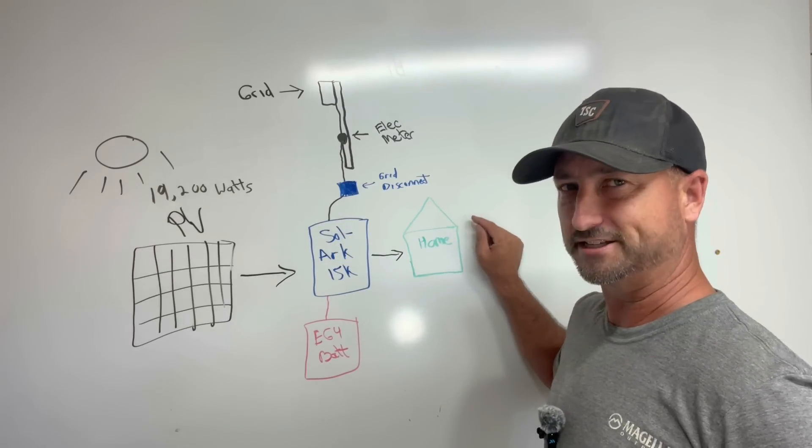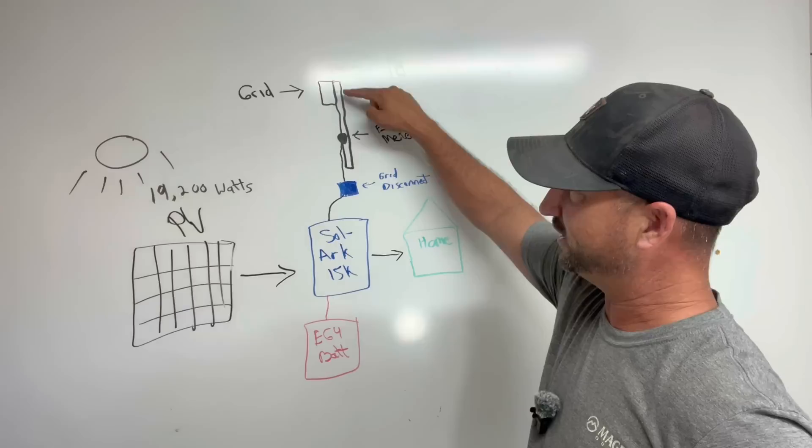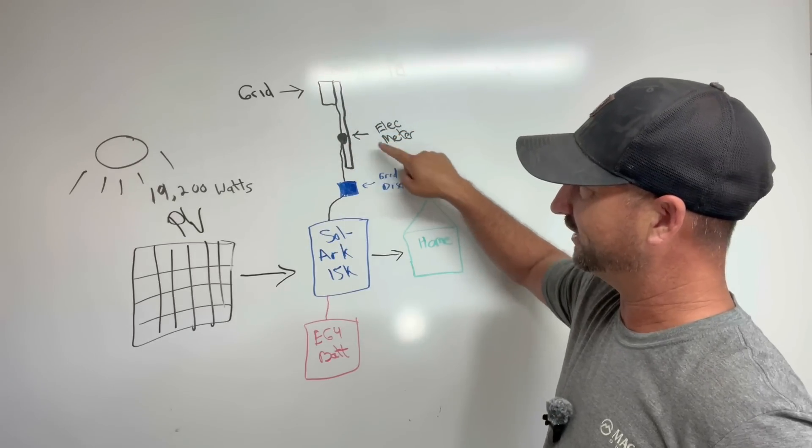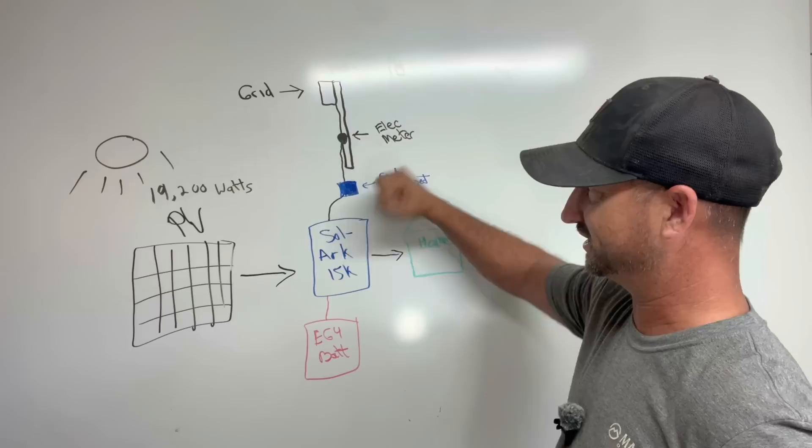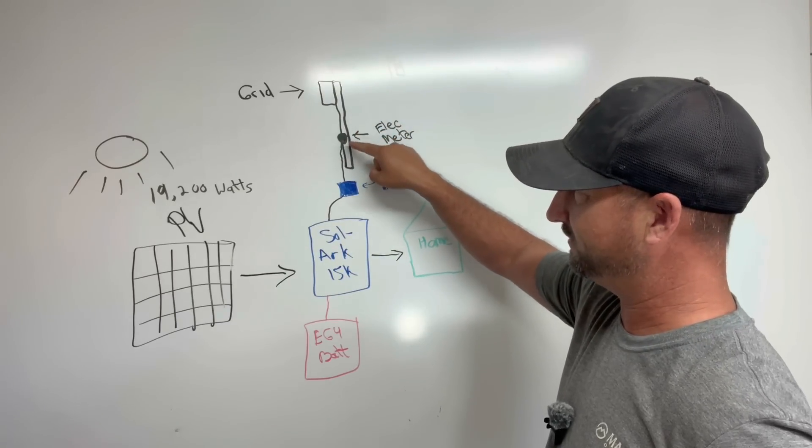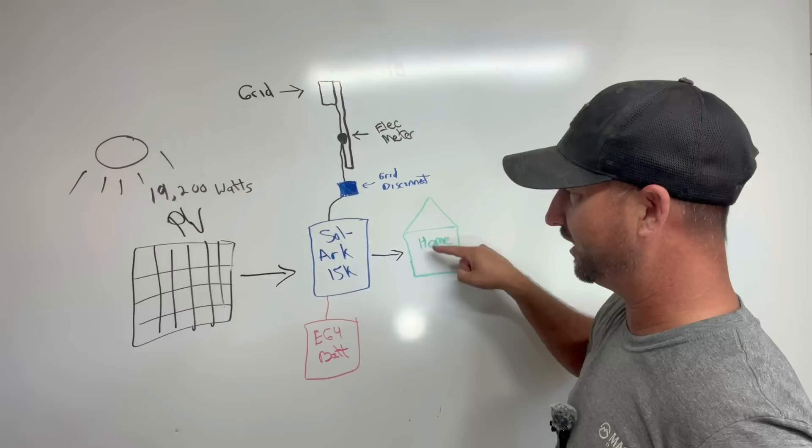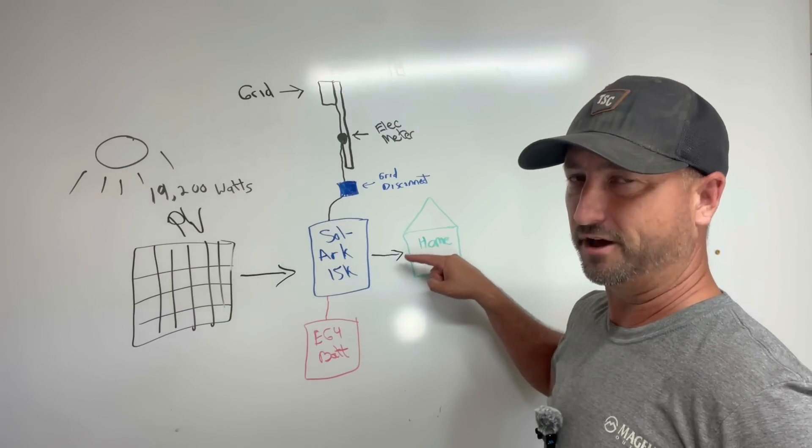Now one thing different about my system than a lot of people's systems is the grid power. It goes to my electric meter that you can see here, and then from my electric meter it goes just to a disconnect where I can completely shut off the grid. But it goes from my meter to the Solark then to my big 200 amp panel on my house.